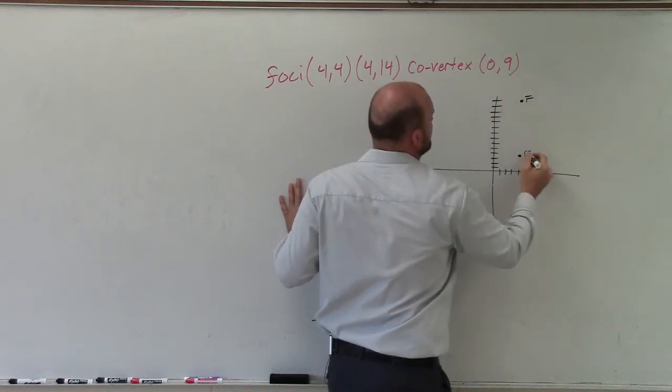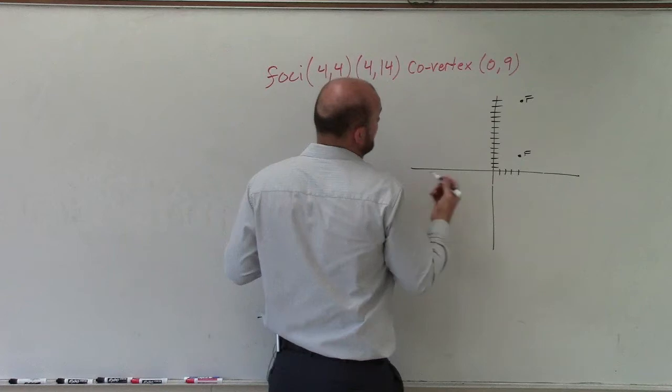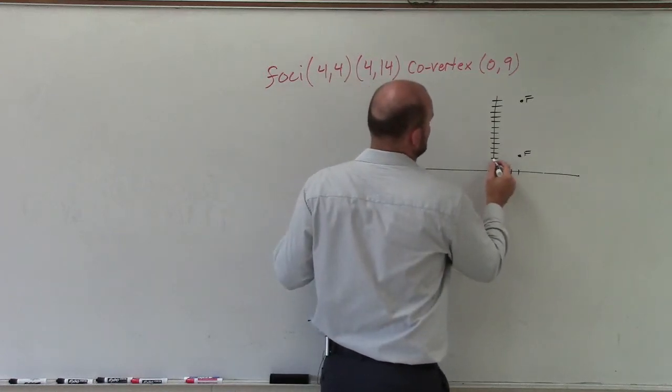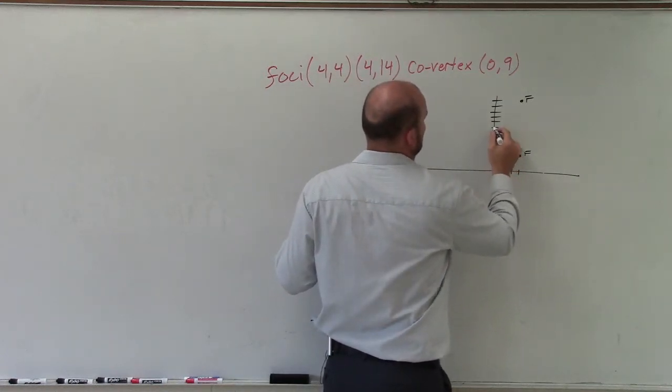OK, so remember, these are the foci. And then the one co-vertex is at (0,9). 1, 2, 3, 4, 5, 6, 7, 8, 9.